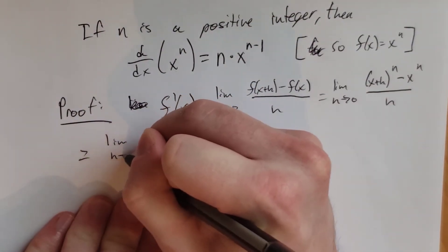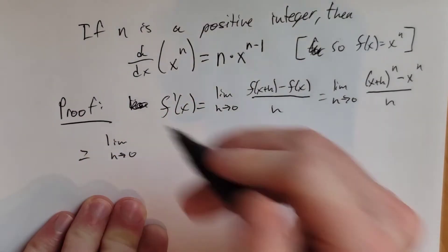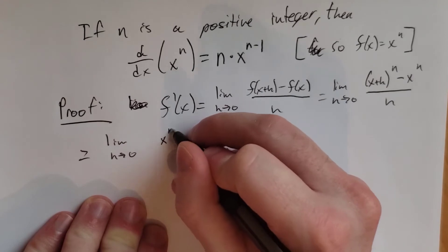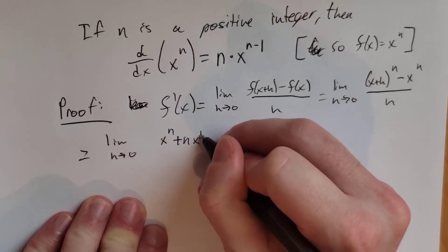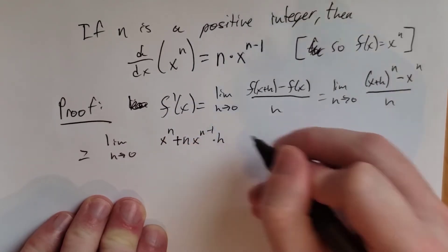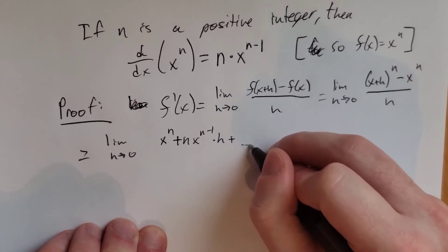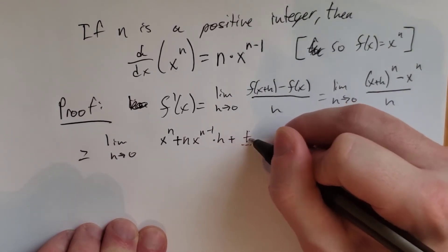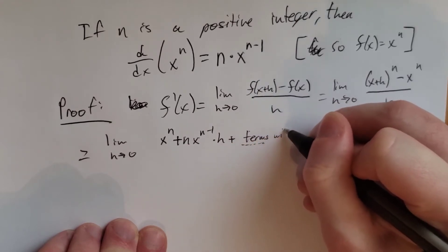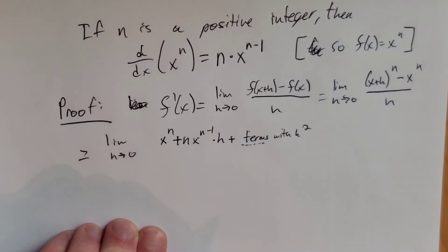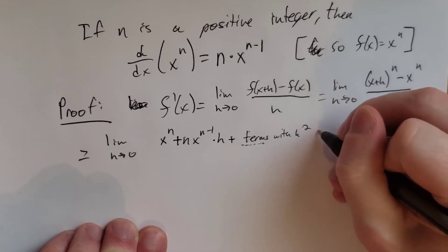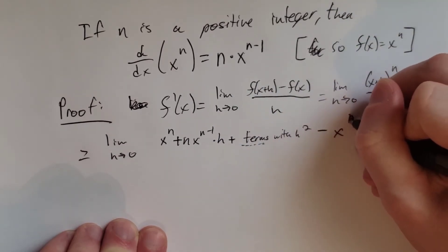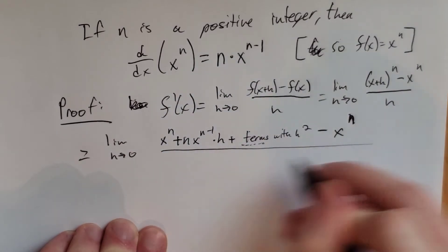Going back to our proof: the limit as h goes to zero of — well, x plus h to the n was x to the n plus n times x to the n minus 1 times h, plus a bunch of terms with h squared — and then minus x to the n, all divided by h.